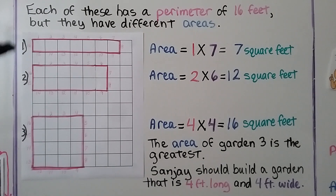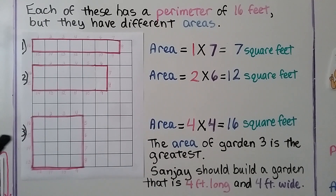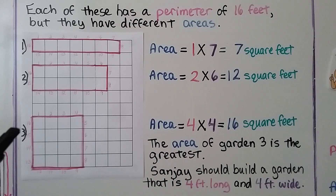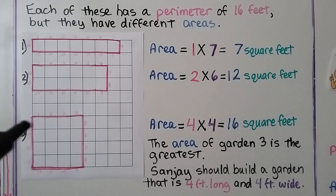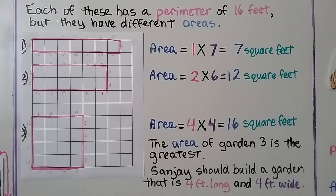So they both have 16 for a perimeter, but they have different areas. Now look at this one — it also has a perimeter of 16, but its area is a length of 4 and a width of 4. That's 16 square feet. The area of Garden 3 is the greatest, so Sanjay should build a garden that is 4 feet long and 4 feet wide for the largest possible garden.